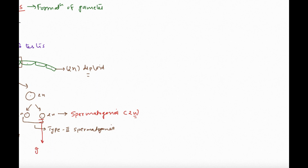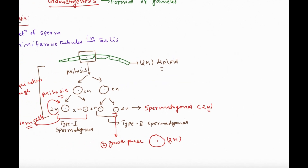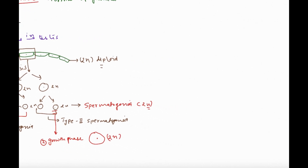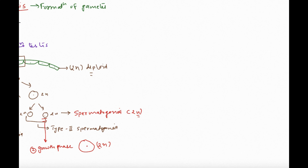Type 2 spermatogonia will enter the next phase: the growth phase. In the growth phase, they accumulate nutrients and become bigger in size. It is still 2n — still diploid. There is no change in the DNA or genetic material yet. These Type 2 spermatogonia that have accumulated nutrients and become larger in size are called primary spermatocytes. They are still 2n because nothing else has happened so far.